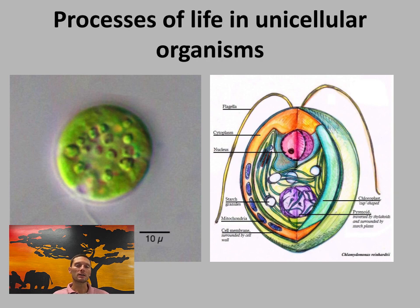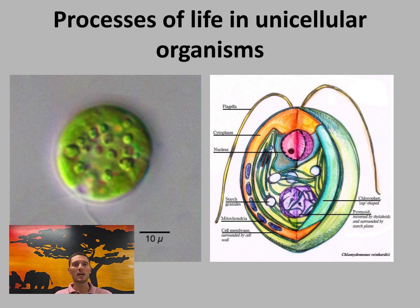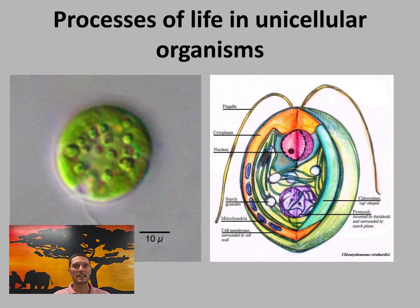The second example is chlamydomonas, a unicellular algae that lives in soil and freshwater. It has a nucleus and can reproduce asexually or sexually. Metabolic reactions take place in the cytoplasm. It has a cell wall and membrane to separate internal and external environments, a contractile vacuole for homeostasis, and performs photosynthesis to produce sugars for ATP. It also has a flagella for movement.